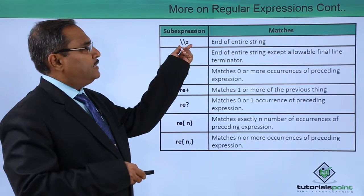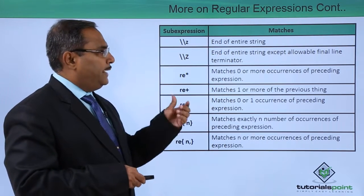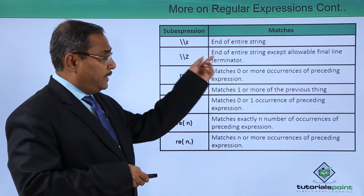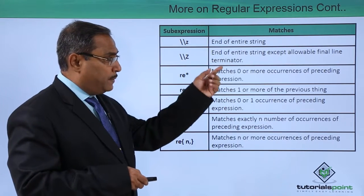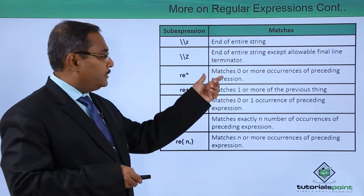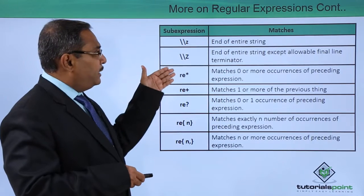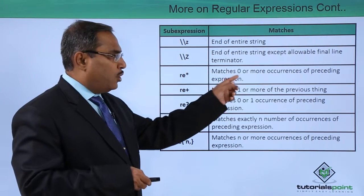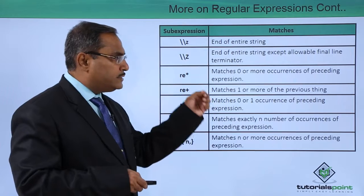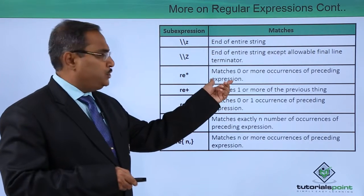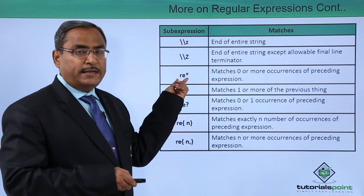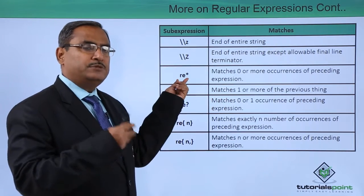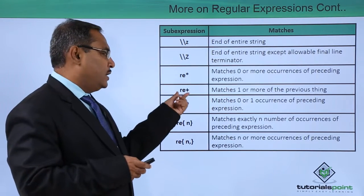Here we have `\z`, which means end of the entire string, and `\Z`, which means end of the entire string except an allowable final line terminator. We also have `re*`, which matches 0 or more occurrences of the preceding expression — meaning the expression can exist zero times or multiple times, and both will be matched.